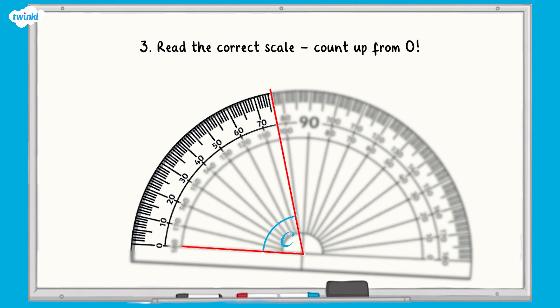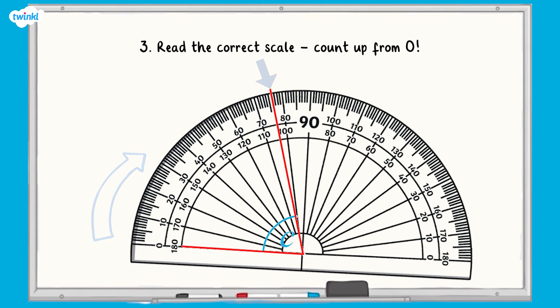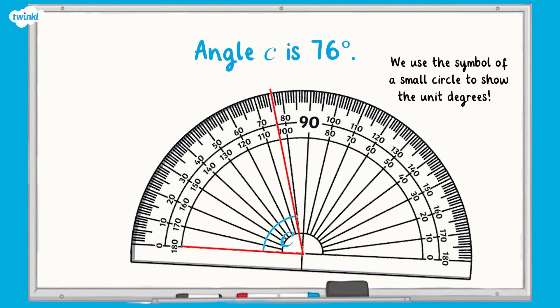Next, read the correct scale. Count up from zero. Angle C is 76 degrees, which fits with the estimate of the angle being less than 90 degrees. We use the symbol of a small circle to show the unit degrees.